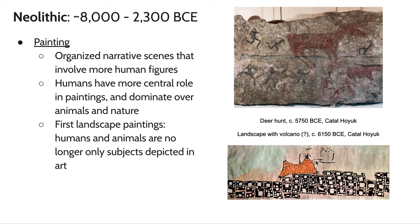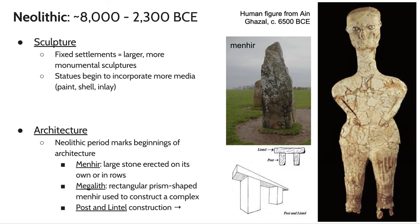You can often distinguish Neolithic from Paleolithic paintings by the roles humans play. Neolithic paintings are more organized and narrative in nature — they tell a story. There's an abundance of human figures dominating over nature: humans shown with domesticated animals and livestock, or hunting and triumphing over animals. We also see the first landscapes — depictions of things that resemble human dwellings and cities, such as a possible volcano depiction in Catalhöyük in modern-day Turkey.